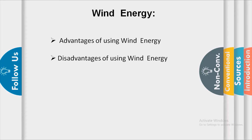The wind speed required to rotate the turbine should be higher than 50 km per hour. There should be some storage cells to take care of energy when there is no wind. Also, establishment of a wind energy farm requires a large area of land — for example, to establish a one megawatt generator farm needs two hectares of land. The initial cost of establishment of wind farms is very high.